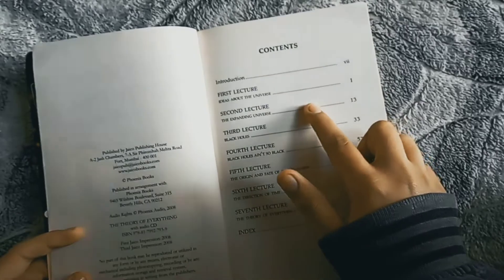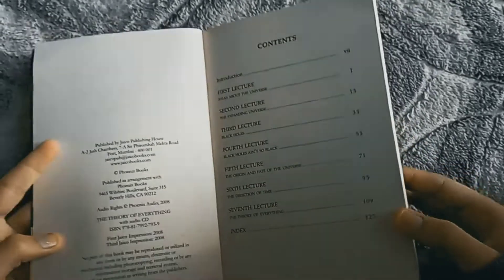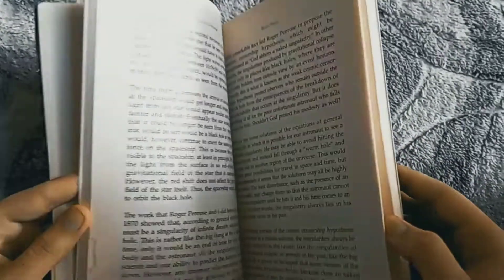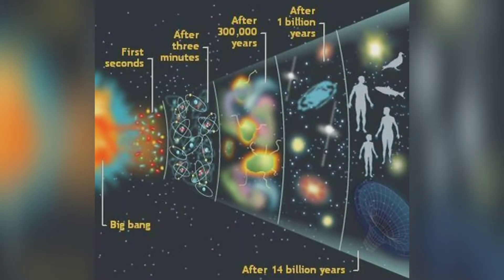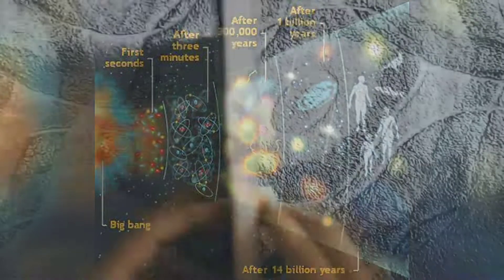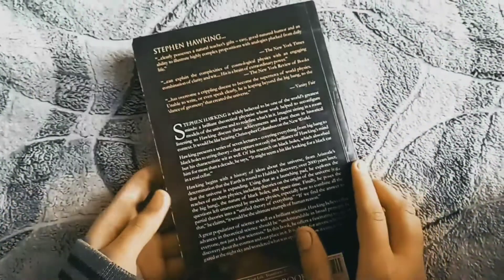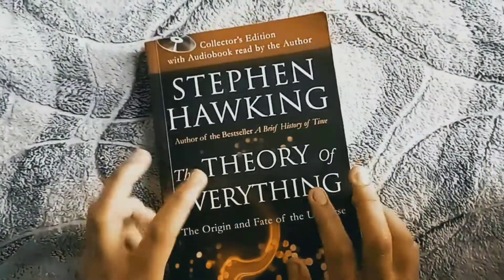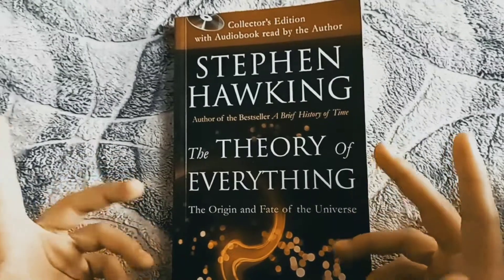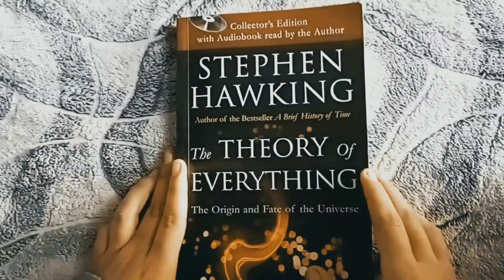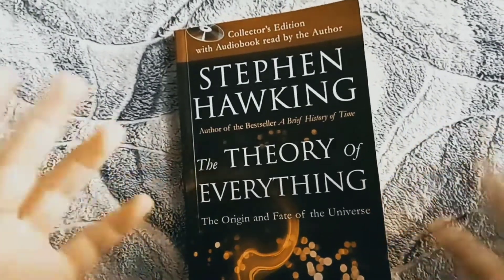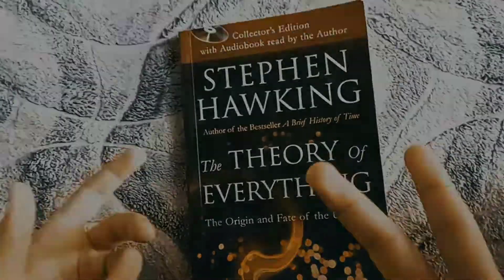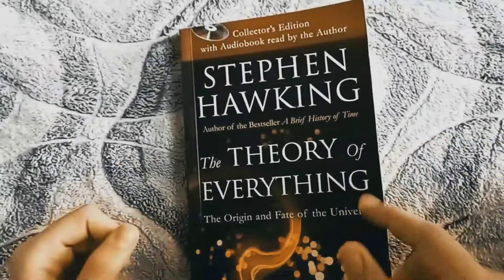You can differentiate one star from another just on the basis of the color of their light. And the most important thing I got to know is that basically when we look at the stars, we are peeping into the past — interesting, right? This book also talks about the contribution of the Indian scientist Subramanyam Chandrasekhar in the field of space studies.